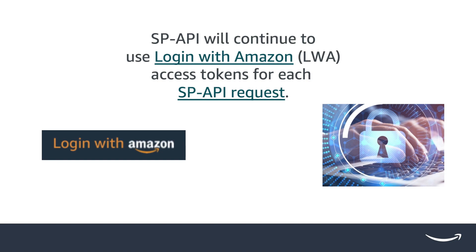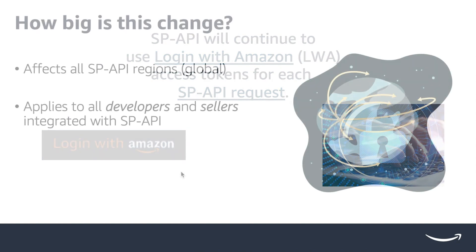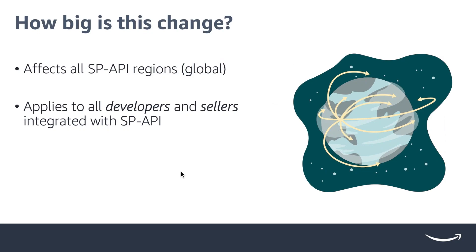For those not familiar, LWA is based on the widely adopted OAuth 2.0, ensuring user-authorized exchanges across sites. SP API will continue to rely on Login with Amazon, or LWA, access tokens for each request. This change applies to all regions.